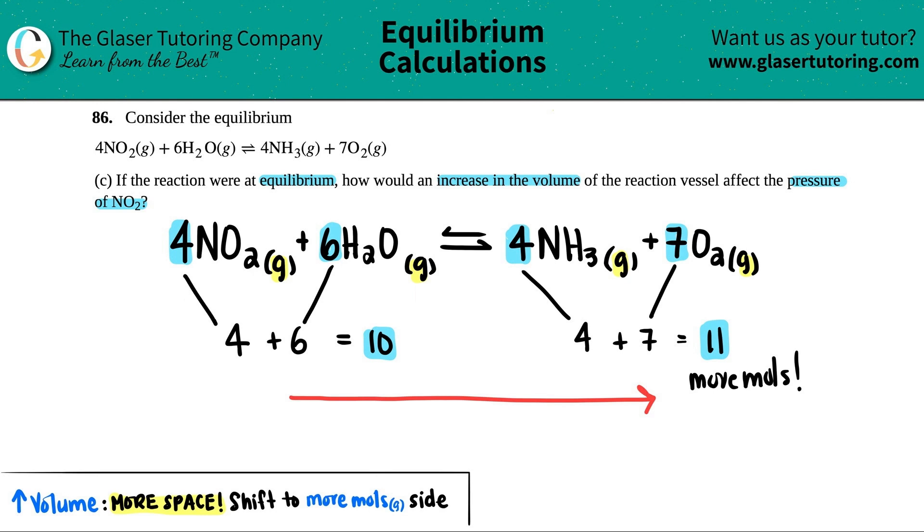Now they specifically asked for what's going to happen to the pressure of NO2. AKA they're just wondering what's going to happen to the numeric value of the pressure of NO2. Since we said that we're going in the forward direction and all of this is going to drop and here's NO2.